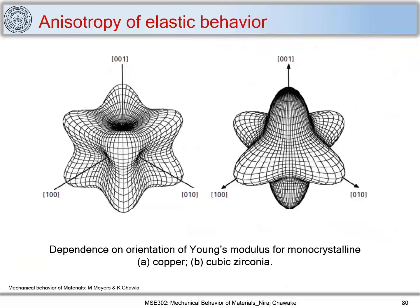Let us look at what exactly anisotropy of elastic behavior means. This slide shows Young's modulus for monocrystalline copper and cubic zirconia. For copper, the maximum Young's modulus is along the body diagonals — the ⟨111⟩ direction — with lowest values along ⟨100⟩. In contrast, cubic zirconia has maximum Young's modulus in ⟨100⟩ and lowest along ⟨111⟩. This anisotropic elastic behavior means elastic properties differ depending on the direction or plane considered.